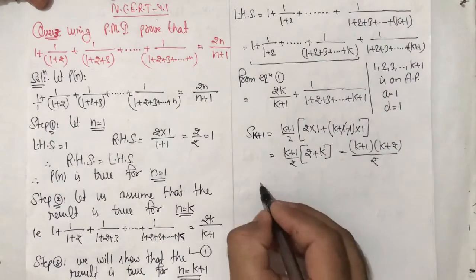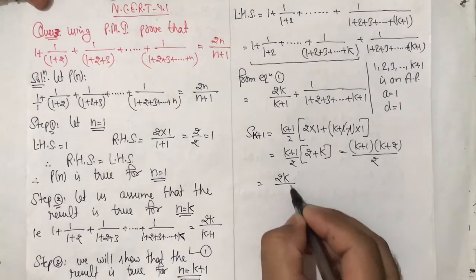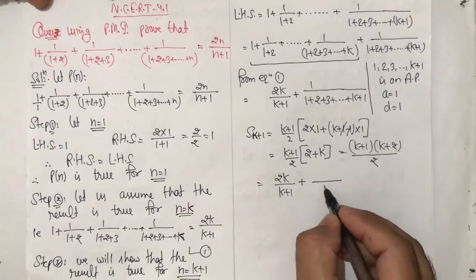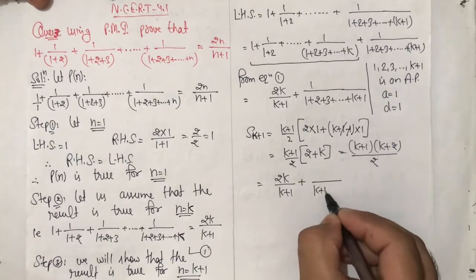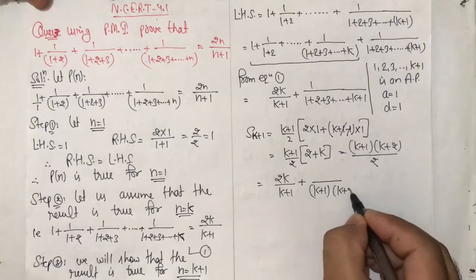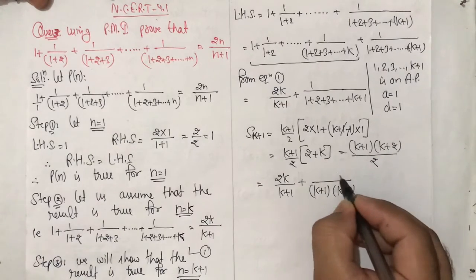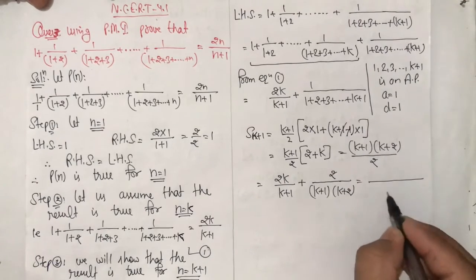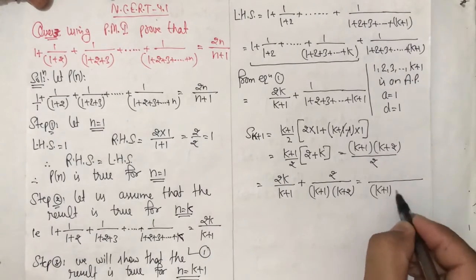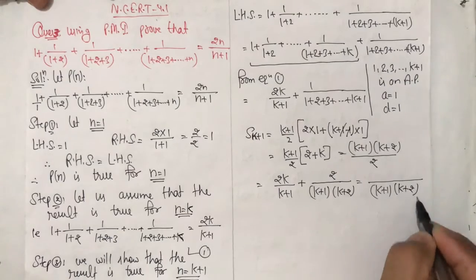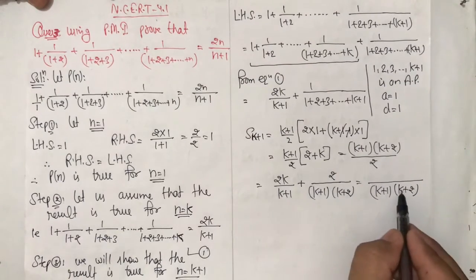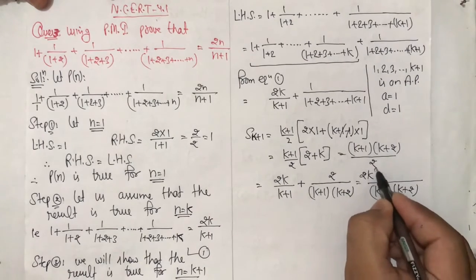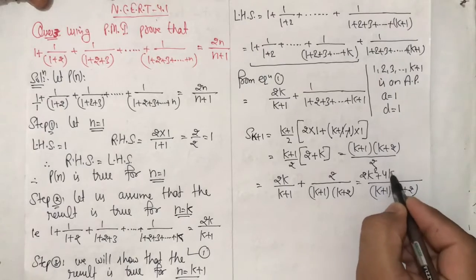Replacing this value in the expression, we get: 2k upon (k plus 1) plus 1 upon [(k plus 1)(k plus 2) / 2], which equals 2k upon (k plus 1) plus 2 upon [(k plus 1)(k plus 2)]. Taking LCM as (k plus 1)(k plus 2), and dividing into the first term gives (k plus 2), so numerator becomes 2k(k plus 2) which is 2k squared plus 4k.